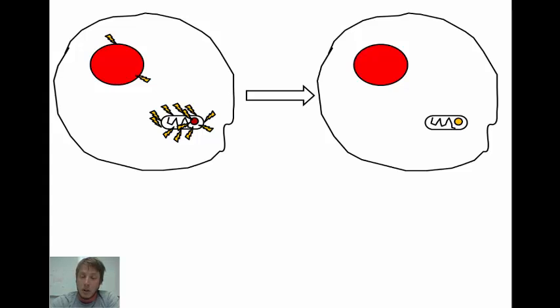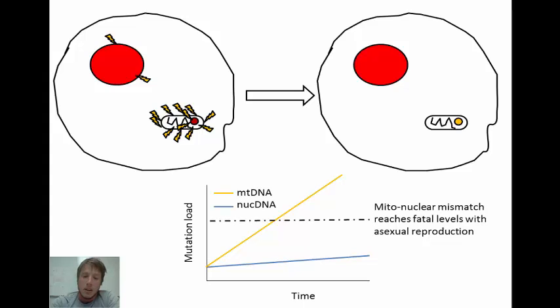These mitonuclear interactions would have been compromised. We contend that in asexually reproducing species, this mismatch between the mitochondrial and nuclear genomes would have reached a fatal level after some amount of time, and would have sent the entire lineage to extinction. But sex represents an interesting solution to this problem.